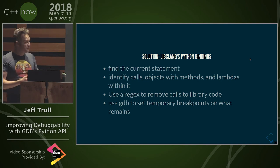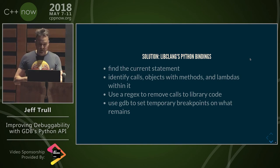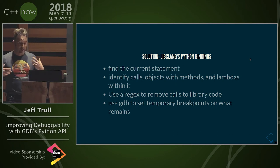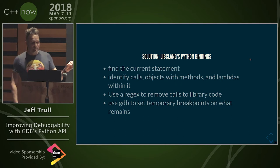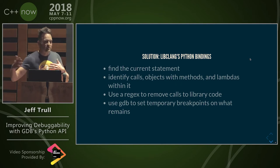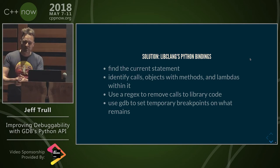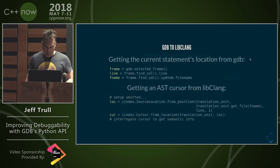With libclang we can find the current statement we're stopped at in GDB, and in that statement identify all the calls that are made, any objects supplied to those calls that have methods, and any lambdas supplied. We can use a regex to look at namespaces and decide which of those things are library code and which aren't, then use GDB to set temporary breakpoints on what remains, continue, and delete the breakpoints — giving us effectively a nice single step for users.